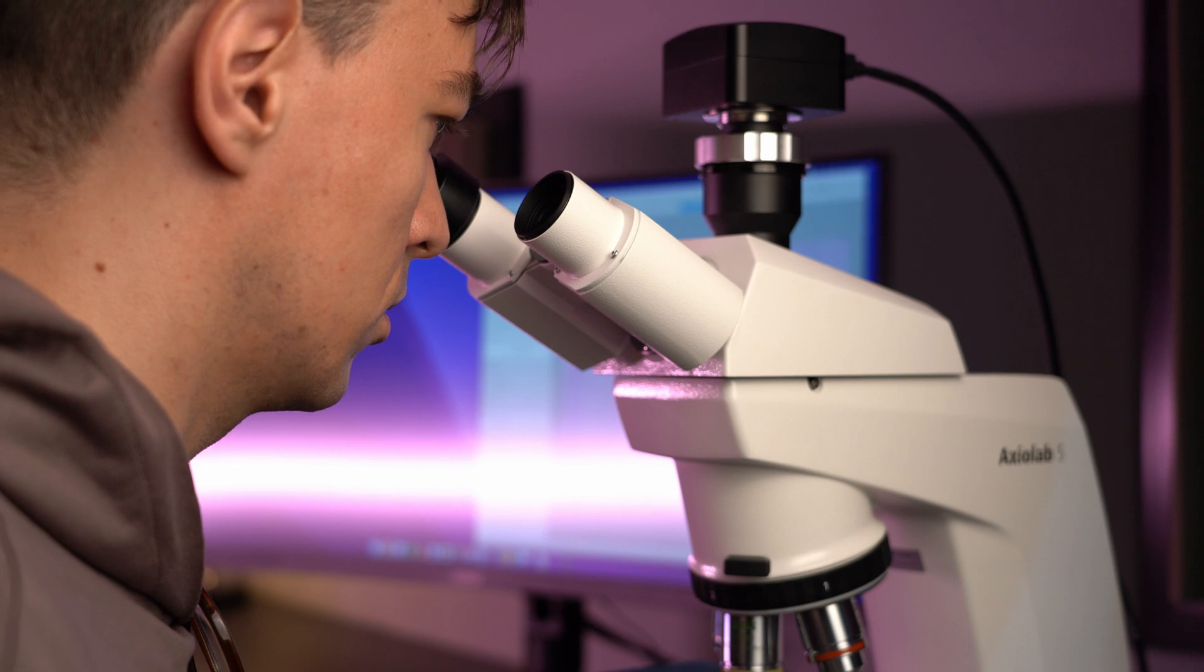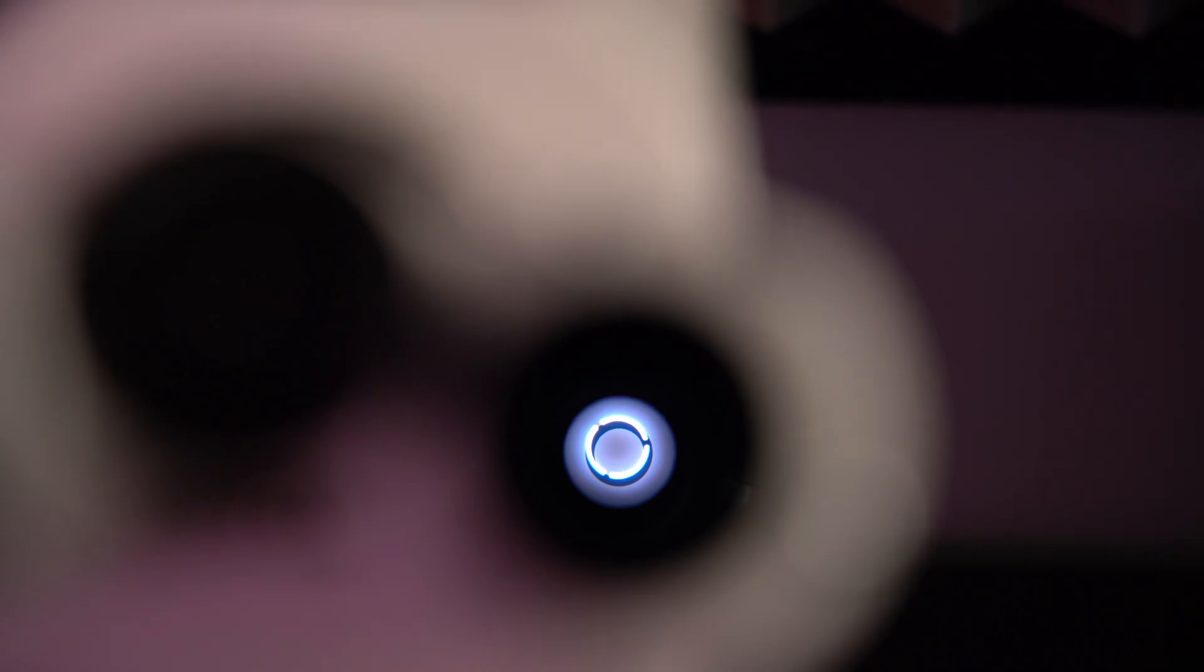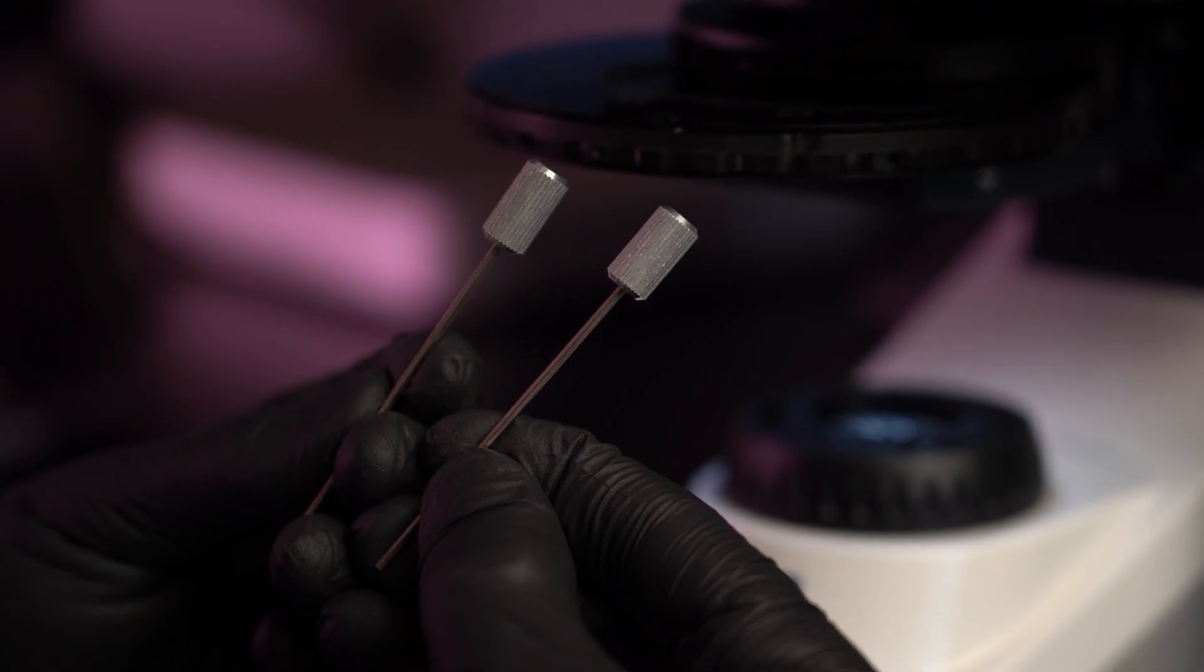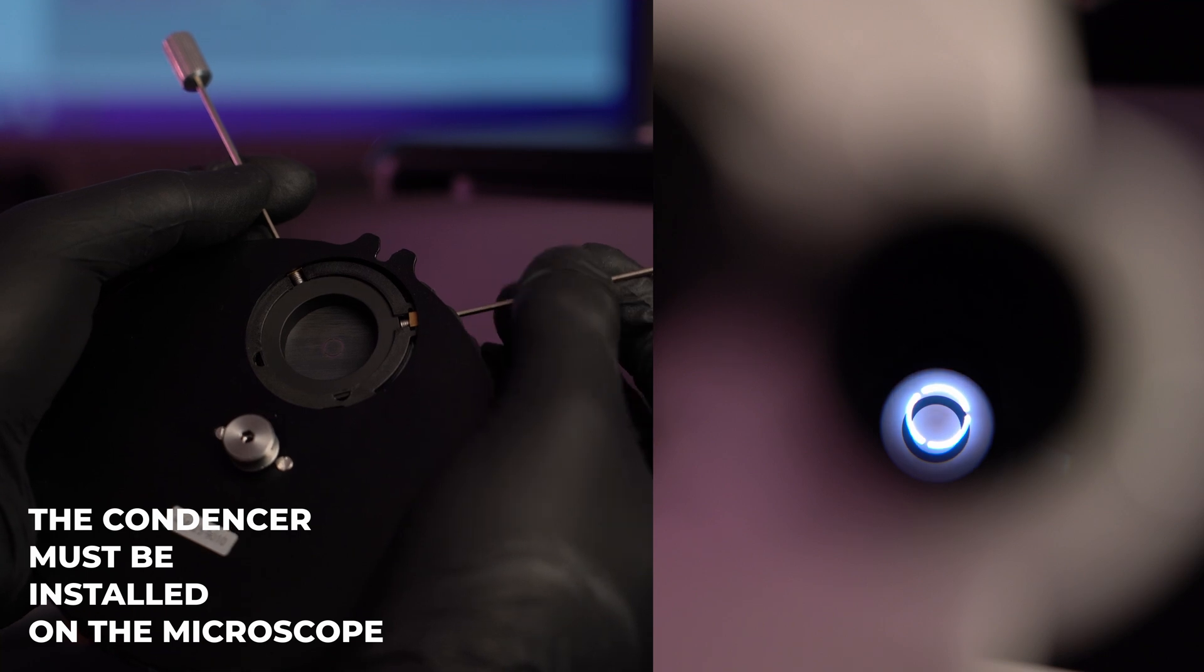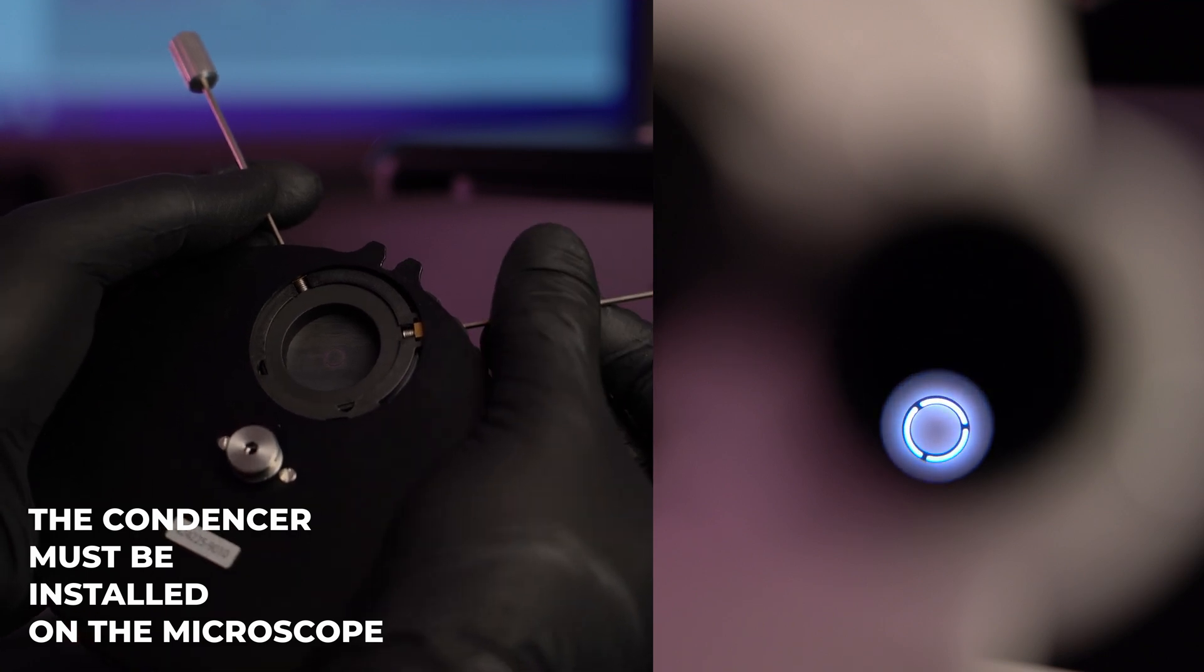It's a special eyepiece with a focus plane exactly on a phase ring. Using hexagon wrenches adjust the phase ring in the condenser coaxial with the phase shifter in the objective.